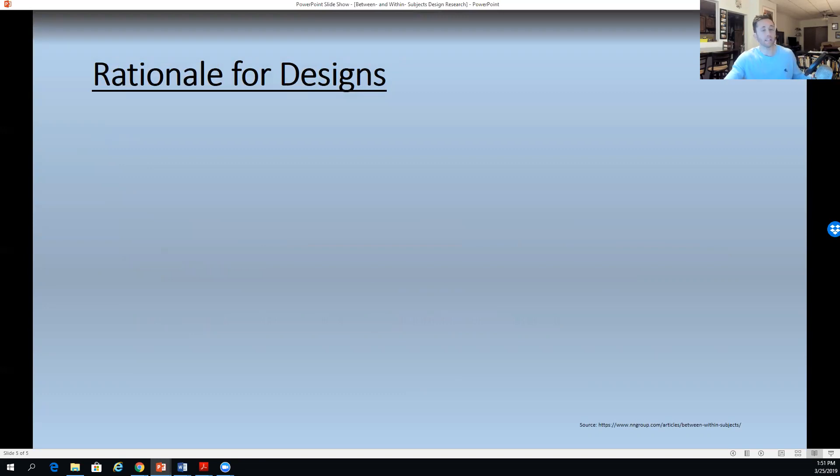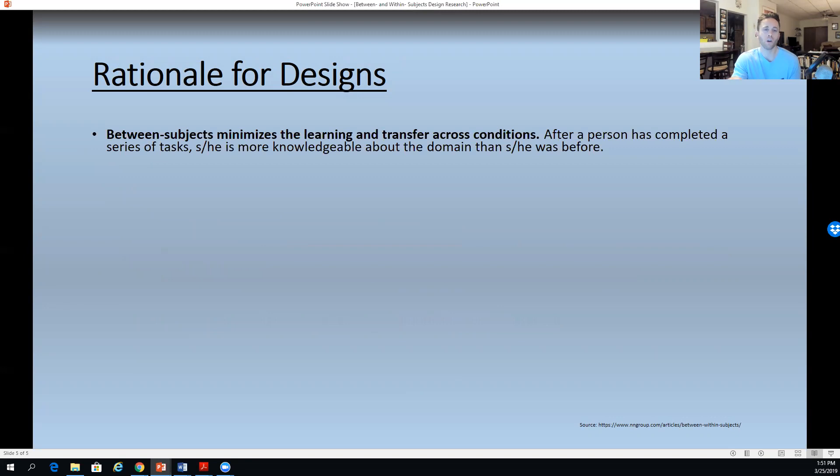The rationale for these designs are several. The first is, when we think about between subjects design, that minimizes the learning and transfer across conditions. For example, within the within subjects, if you get both treatments that are measuring the same domain or the same theme, oftentimes you'll learn something with the first treatment that will transfer over to you doing better in the second treatment. And therefore, it nullifies a lot of the accuracy to what we're trying to measure. The second is, the between subject studies often have shorter sessions. If we're just using one group of students to measure two different treatments, we can't possibly do the same amount of instruction or treatment in the time that we have that we could have done with two different groups.